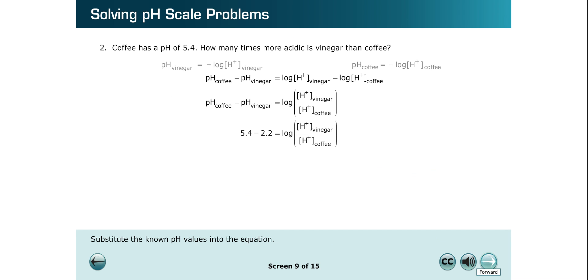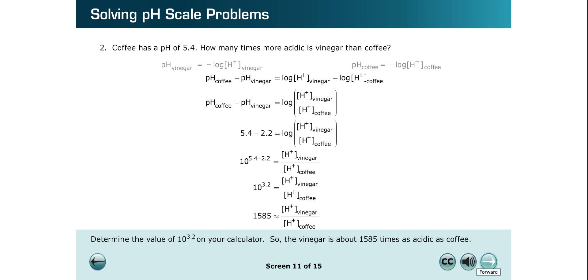Substitute the known pH values into the equation. Change the equation from logarithmic form to exponential form. Determine the value of 10 to the exponent of 3.2 on your calculator. So the vinegar is about 1585 times as acidic as coffee.